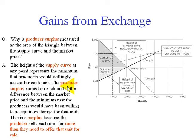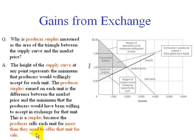The producer surplus earned on each unit is the difference between the market price and the minimum that producers would have been willing to accept in exchange for that unit. This is the surplus because the producer sells each unit for more than they need to offer that unit for sale — they're receiving revenue that is actually greater than their opportunity cost. Hence, economists call that the producer surplus.